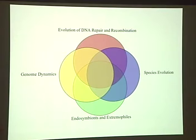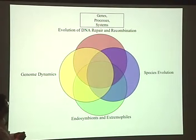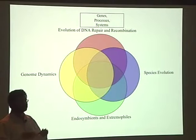These are the four general areas that we work on. We're interested in these areas primarily because we're interested in studying mechanisms of microbial diversification. We study evolution of DNA repair and recombination processes — the genes, the processes themselves, and the systems — because those have a profound influence on the mutation rates, the mutation patterns, the rearrangement patterns, et cetera, in genomes.